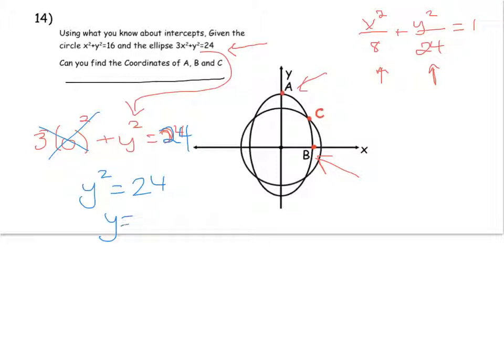So y equals root 24. So that point A then, up there, is the coordinate point 0 root 24. And you could get root 24 in your calculator. I don't have my calculator handy, so I'm going to ask you to do that.